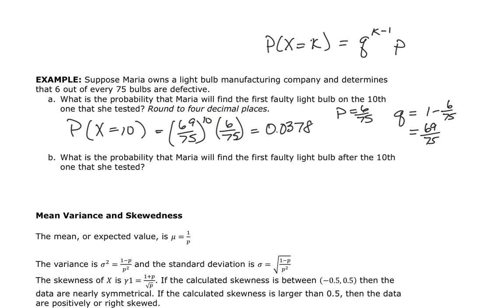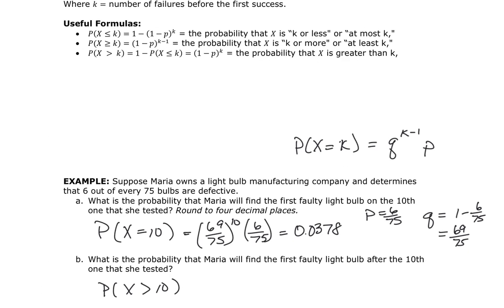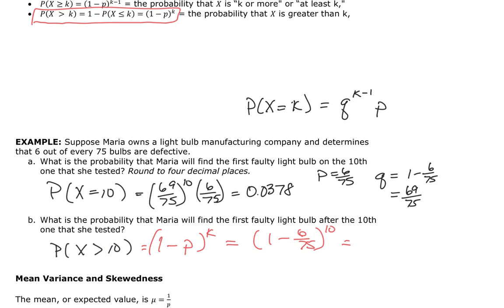So P(X > 10) = 0.4344, meaning Maria actually has a higher probability of finding the first defective bulb after the 10th one than finding it exactly at the 10th one.